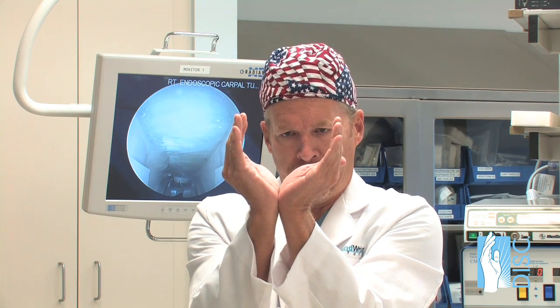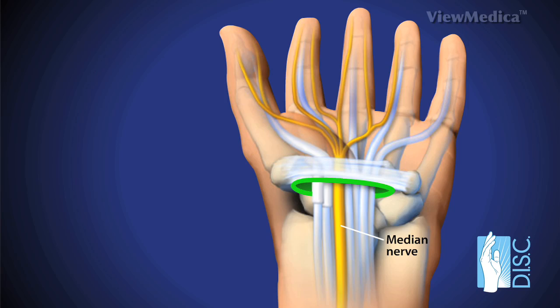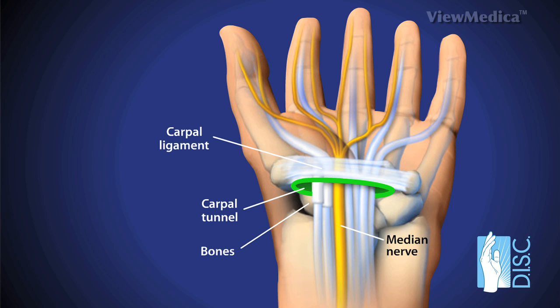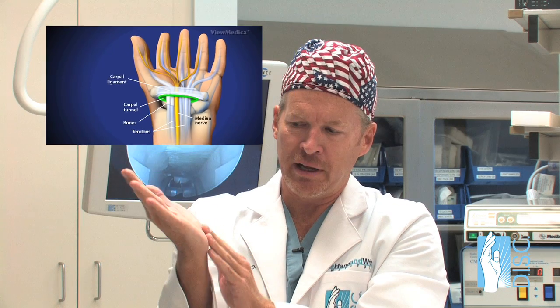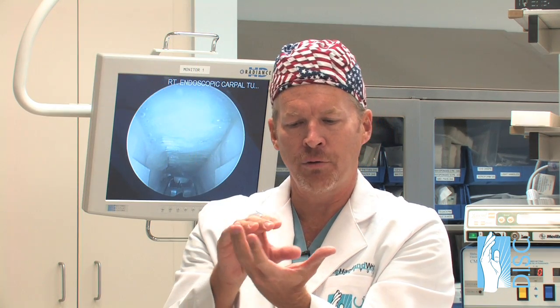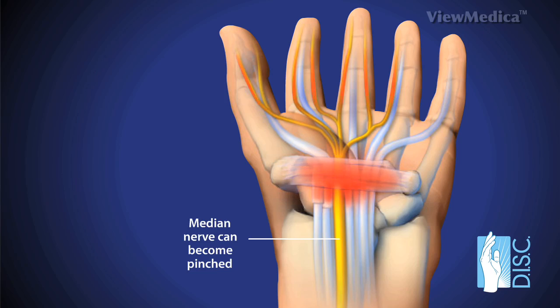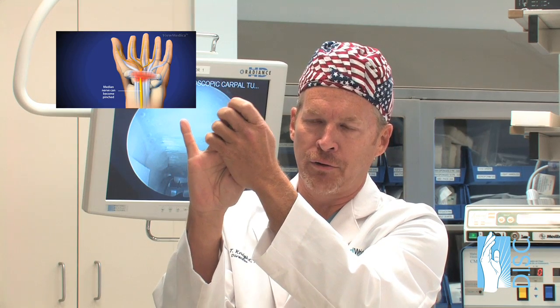The carpal tunnel is a tunnel deep in the wrist. The floor of the tunnel is made up of the back of the bones of the wrist. Across that tunnel is a ligament called the transverse carpal ligament, which we'll talk about when we discuss the surgery for this condition. Within that tight unyielding space, inflammation puts pressure on the median nerve, which is a nerve that goes through the tunnel out to the fingers of the hand.